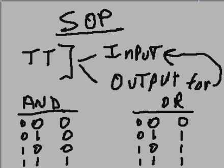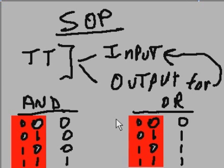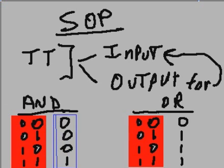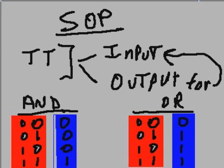Here are my inputs, and my outputs are to the right. So I've got my inputs, input combinations, and my outputs that correspond to those input combinations. Now I want to put this into the format of an SOP — sum of products.